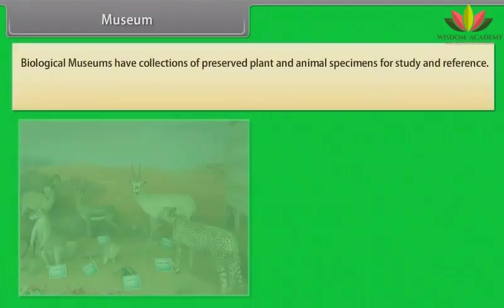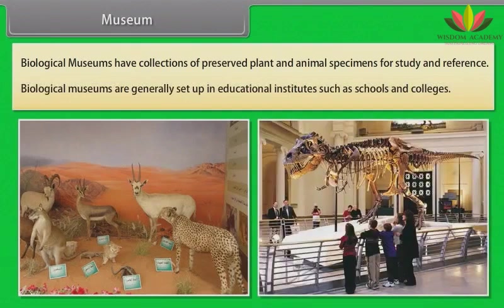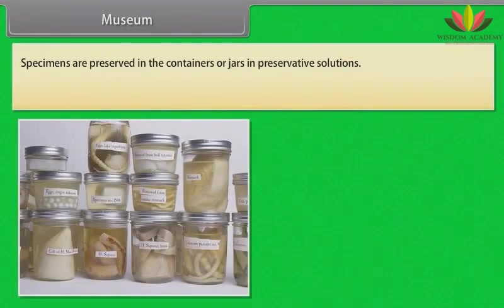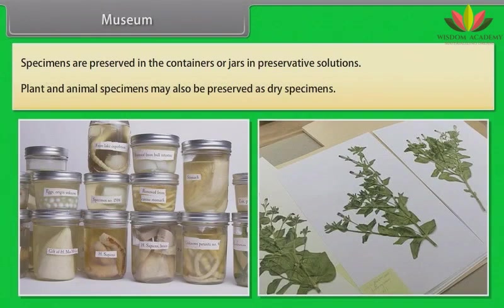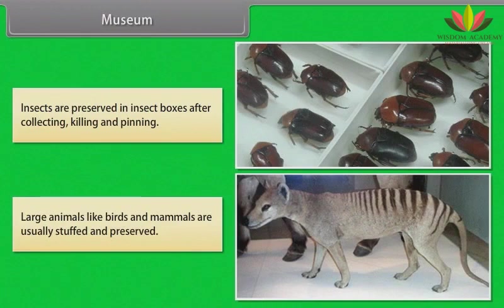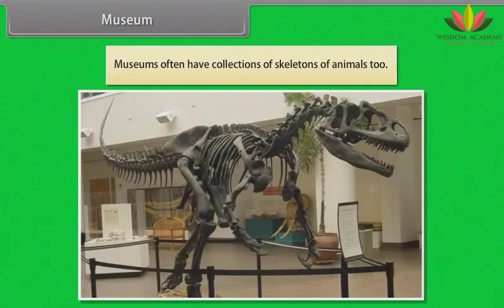Museum: Biological museums have collections of preserved plant and animal specimens for study and reference. They are generally set up in educational institutes such as schools and colleges. Specimens are preserved in containers or jars in preservative solutions. Plant and animal specimens may also be preserved as dry specimens. Insects are preserved in insect boxes after collecting, killing and pinning. Large animals like birds and mammals are usually stuffed and preserved. Museums often have collections of skeletons of animals too.